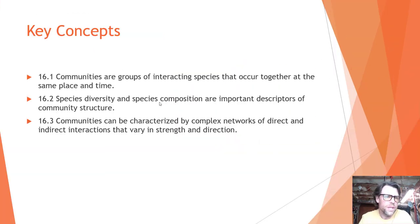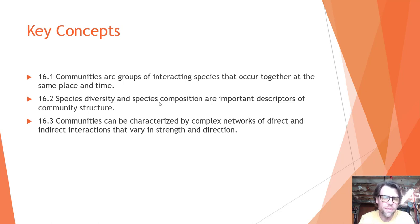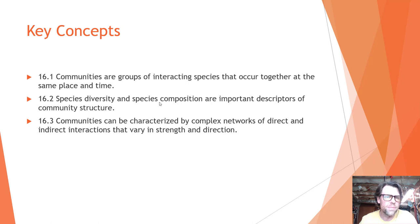This is chapter 16 in your textbook. The key concepts we're going to cover today are that communities are groups of interacting species that occur together at the same place and time. There's likely to be an exercise associated with calculating and comparing species diversity from different community types. This is also where I was wanting you to go with your iNaturalist project, so these next few chapters are good topics to think about with your iNaturalist project.